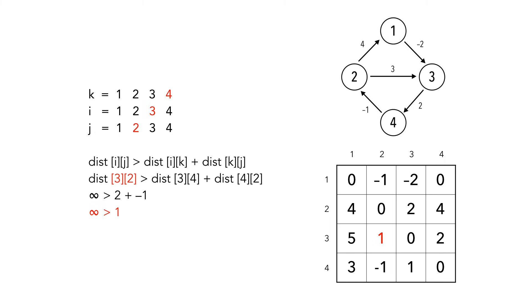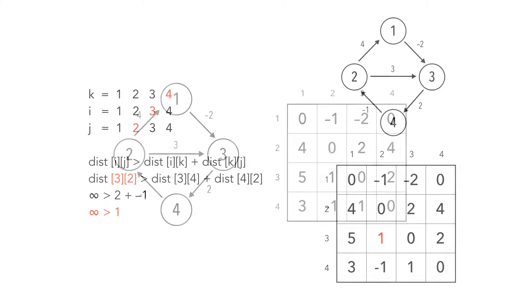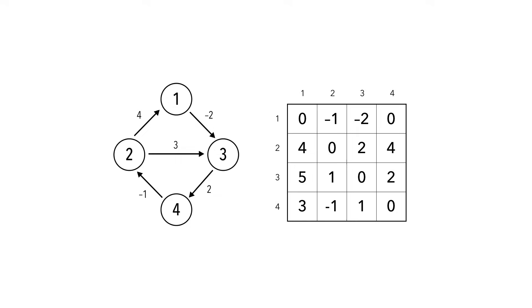This is the last iteration that affects our table. Here is our result, a table of shortest paths between all pairs of vertices.